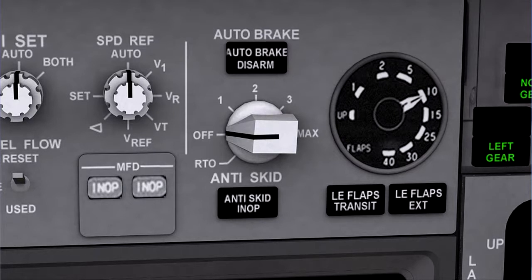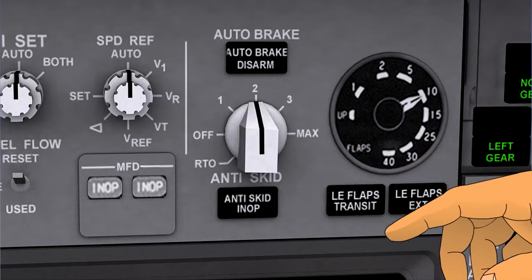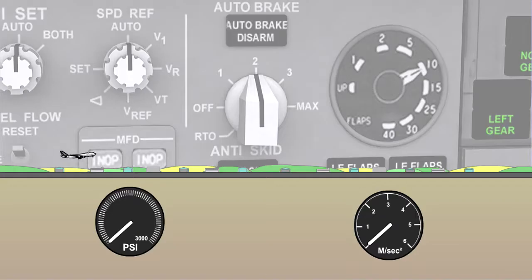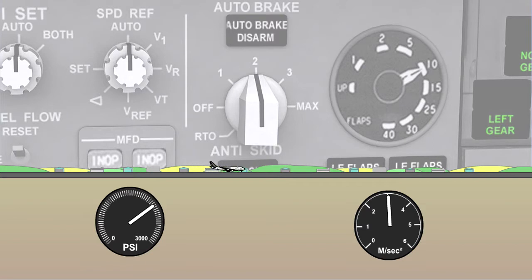On systems with a rotary selector, the landing autobrake system is armed by selecting one of the deceleration rates on the autobrake selector. The system is now armed, provided the anti-skid system is serviceable and the normal brake system is being used. If these parameters are not met, then the autobrake disarm light will illuminate. On touchdown, with ground mode and wheels spin-up sensed, the brakes will be automatically applied and will slow the aircraft at the selected rate of deceleration to a complete stop, or until the autobrakes are disarmed.